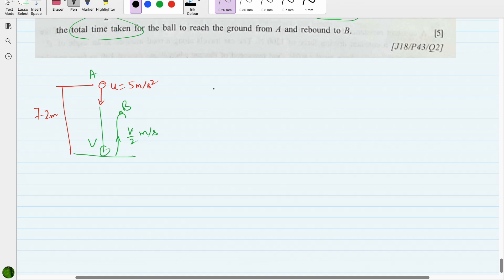First of all, v² - u² = 2as. I need to find v, which is unknown. Initial speed is given, which is 5, and acceleration—it is falling under the action of gravity, that is 10.